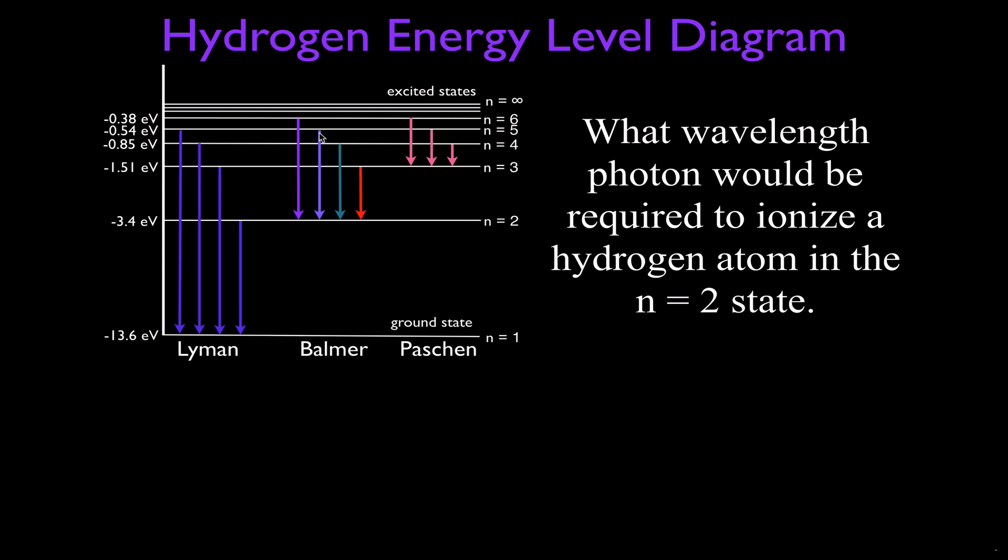For this video, we have a hydrogen energy level diagram. We want to know what wavelength photon would be required for absorption by this hydrogen atom to ionize that hydrogen atom when it's already in its excited state of n=2.